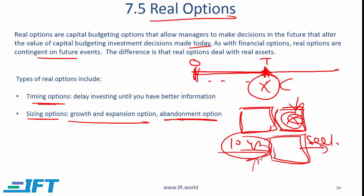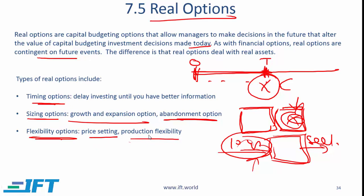That is another example of embedding an option into your real contract. You can also have flexibility options, which include price-setting options — where your contract with your customer gives you flexibility to increase prices — and production flexibility, where you spend extra money on your plant so that you have the flexibility to build more kinds of products. You can also set up arrangements with suppliers so that if one supplier fails, you can go to others. Smart managers, when doing projects, try to have options that allow them to make changes at a later point once the project has already started.